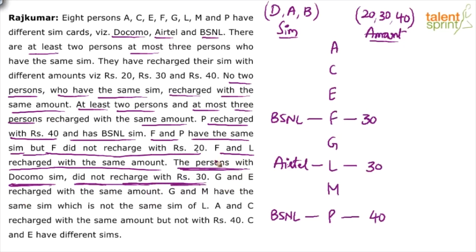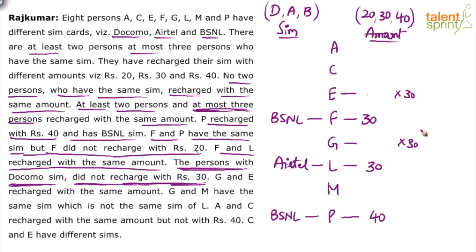G and E recharge with the same amount. We have no clue about G's or E's individual amounts. Can G and E both take ₹30? No — if both get ₹30, then E, F, G and L would all have ₹30, making four persons with ₹30. But maximum three persons can have the same recharge amount. So ₹30 is ruled out for G and E. Can they both take ₹40? Yes — only one person (P) has ₹40 so far. So E and G will either both have ₹20 or both have ₹40.